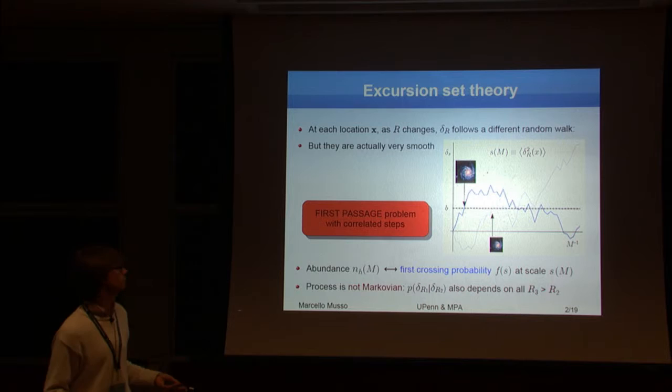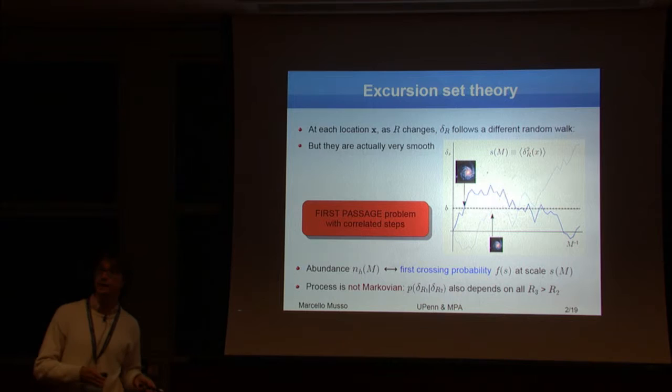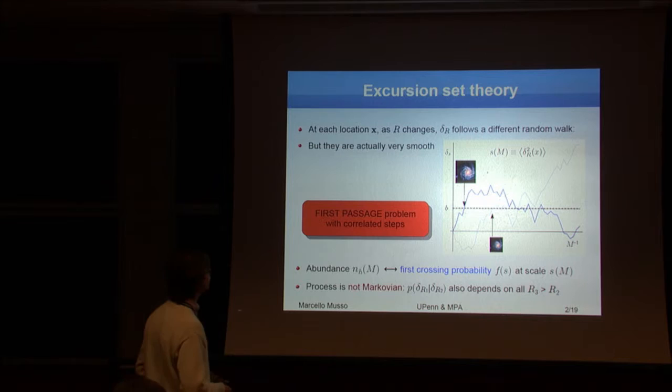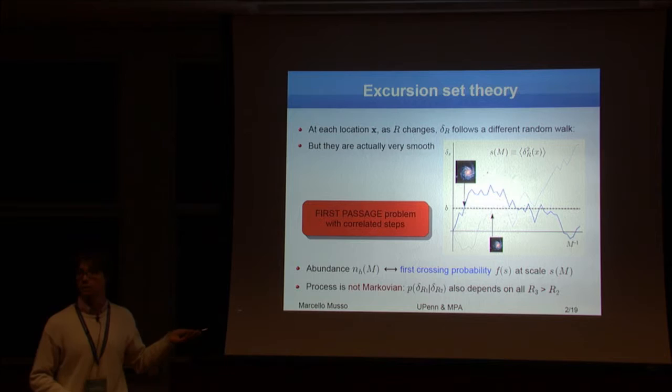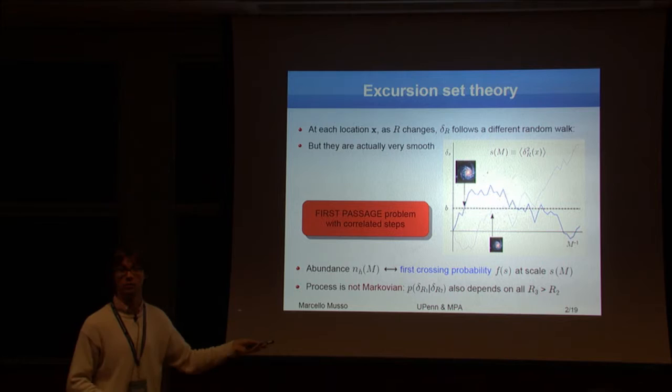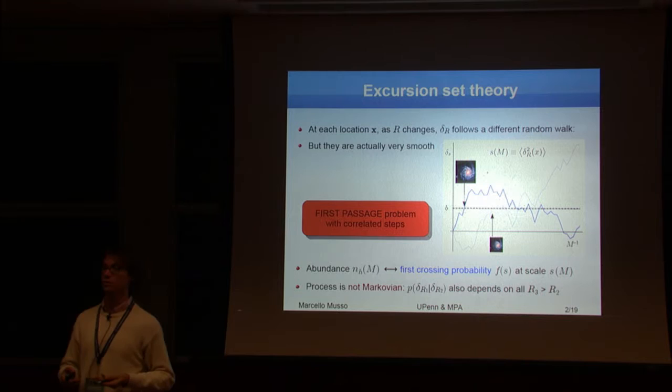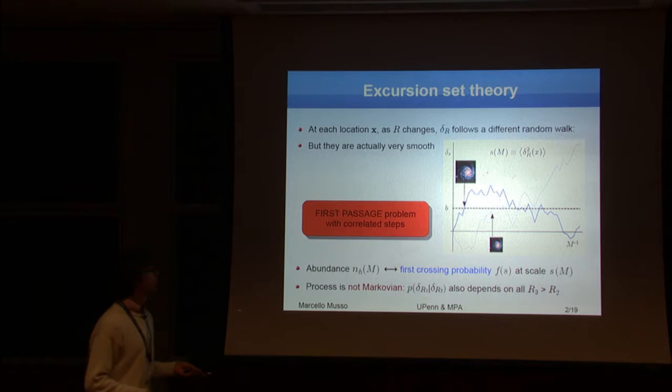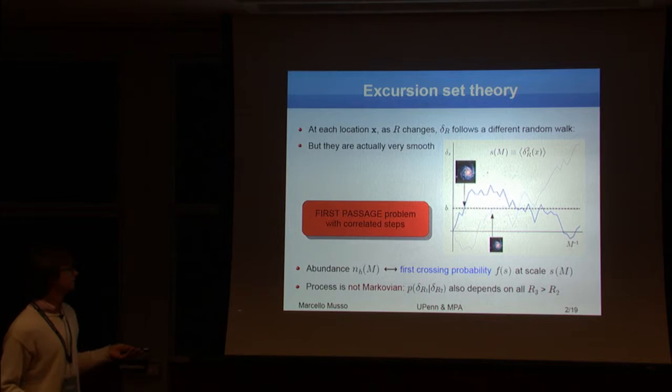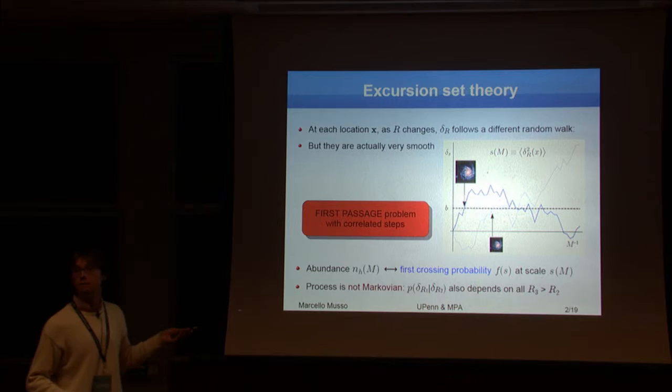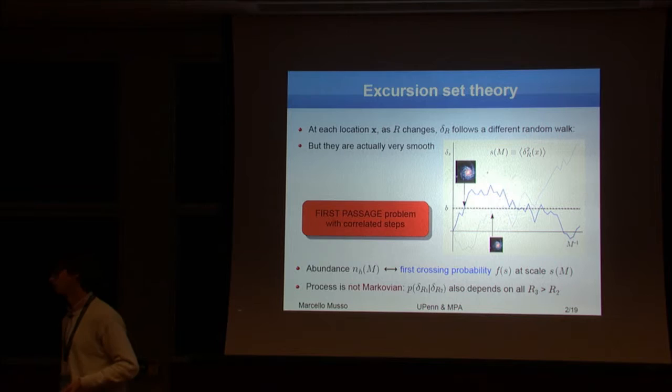Different places will have different trajectories associated to them, so they will have different crossing scales, and this will give halos of different masses. So as you can see, this is a first passing problem, because we want to see the scale for which your Delta function of radius crosses for the first time. The problem here is that the random walks that you are playing with have correlated steps.